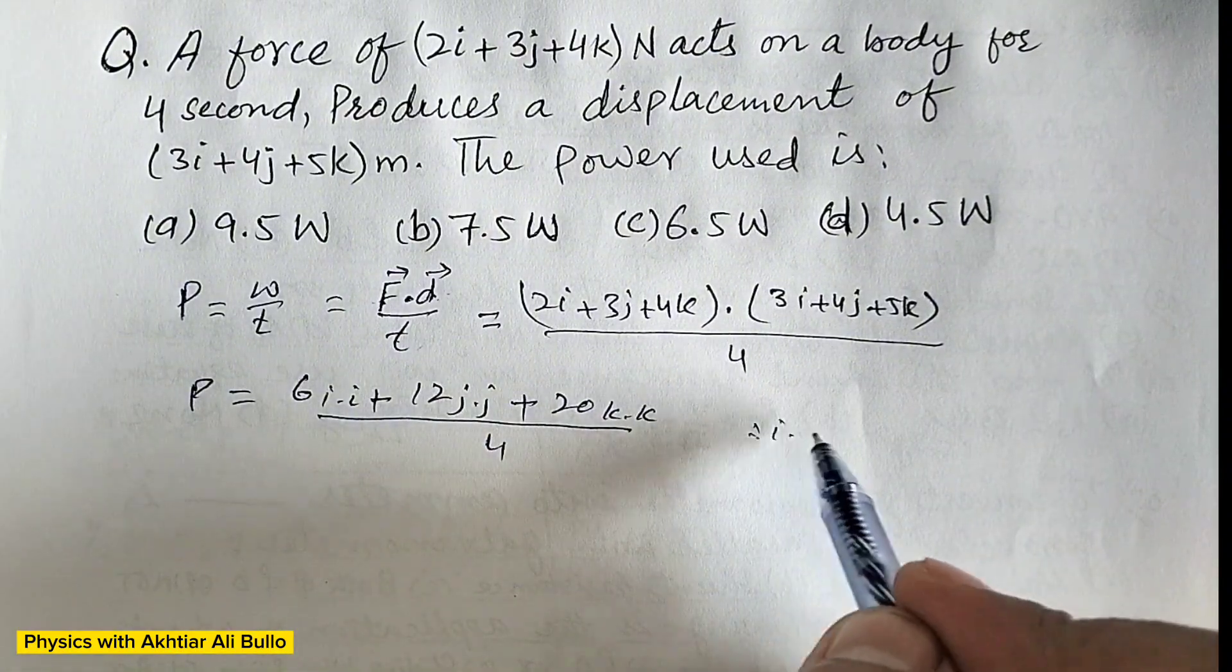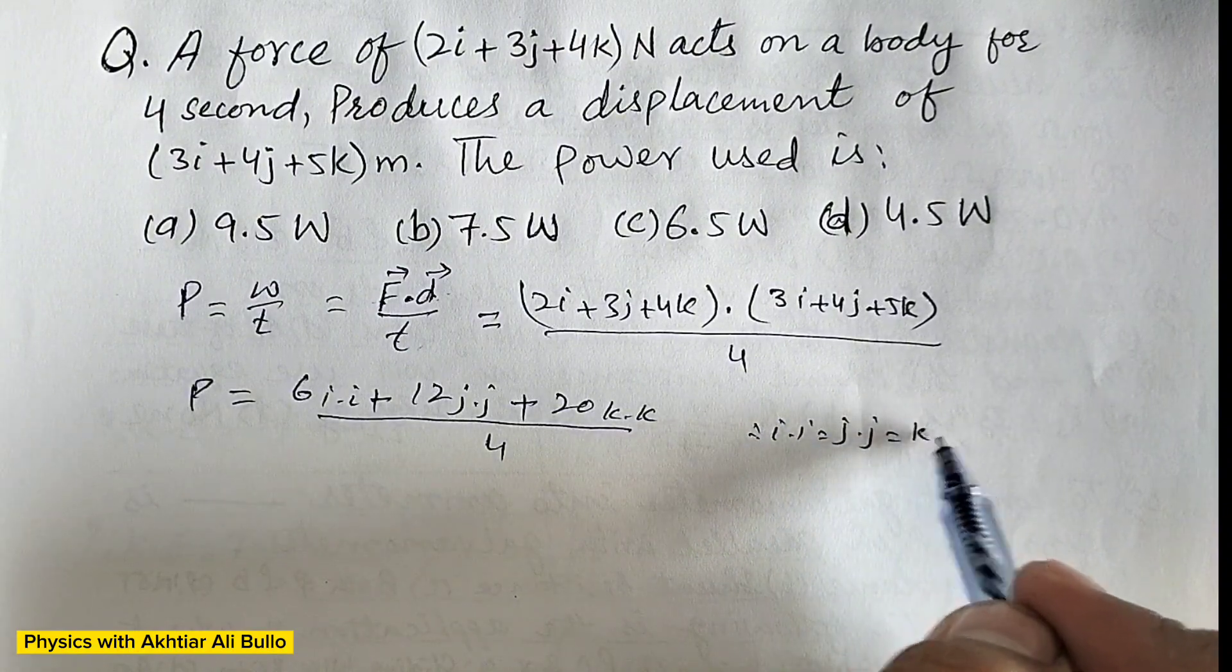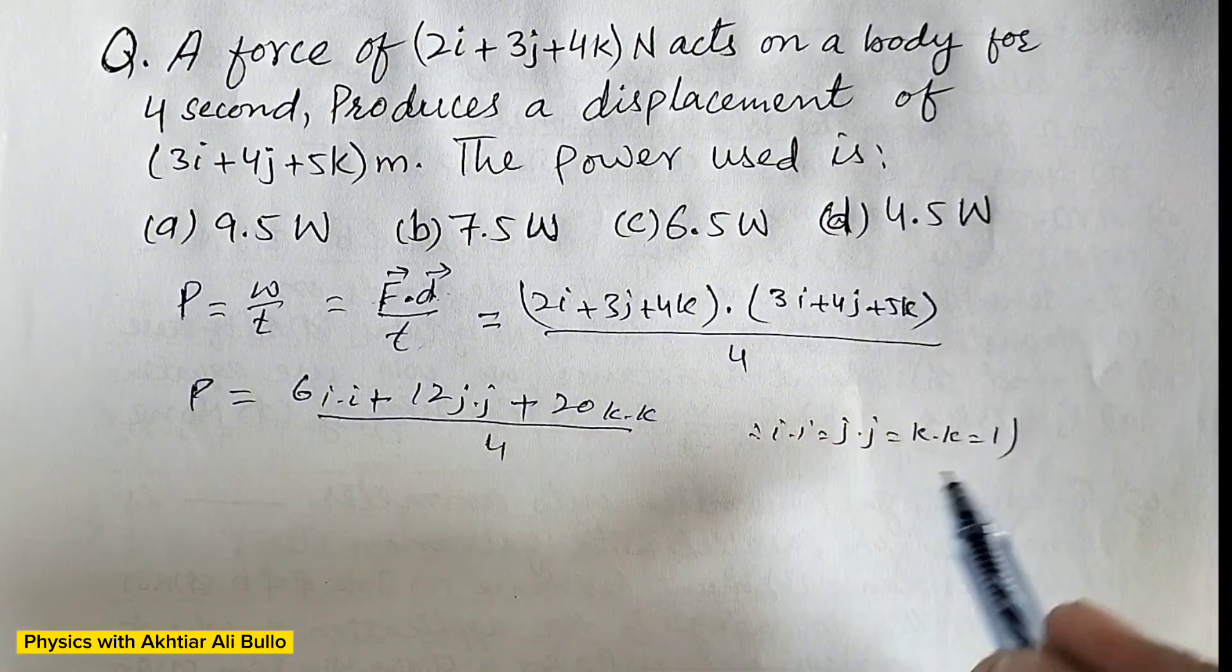As we know that i dot i is equal to j dot j is equal to k dot k is equal to 1.